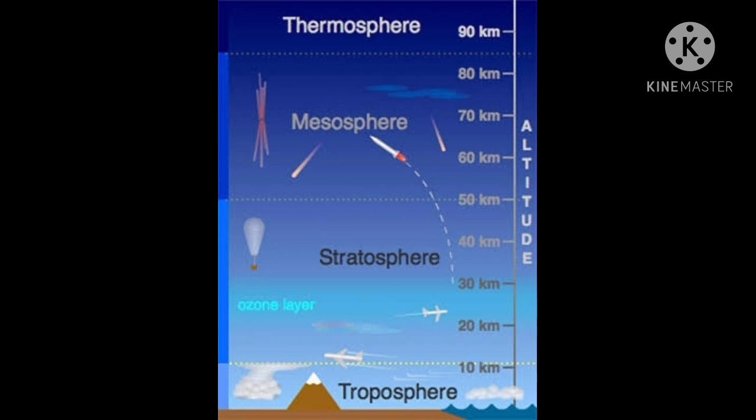The stratosphere. Stratosphere has the ozone layer which absorbs the ultraviolet radiations from the sun. If there were no ozone, life would not be possible. Because of the absorption of the ultraviolet radiation, the temperature steadily rises in the stratosphere.